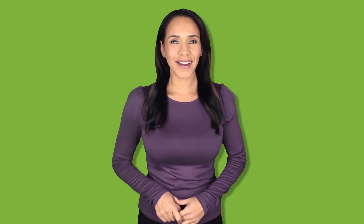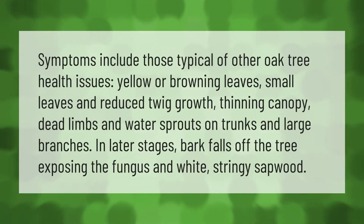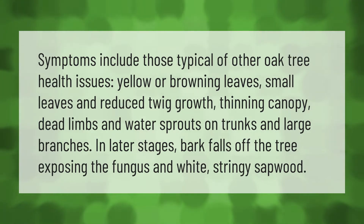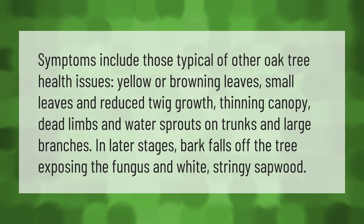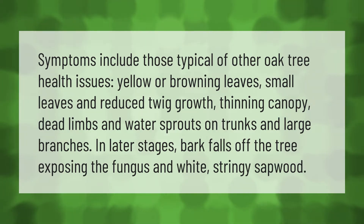Symptoms include those typical of other oak tree health issues: yellow or browning leaves, small leaves and reduced twig growth, thinning canopy, dead limbs, and water sprouts on trunks and large branches. In later stages, bark falls off the tree, exposing the fungus and white stringy sapwood.